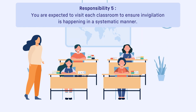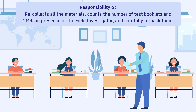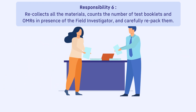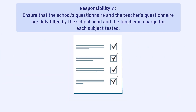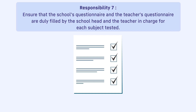Once the survey has started, you are expected to visit each classroom to ensure invigilation is happening in a systematic manner. Once the survey is complete and all the OMRs are filled, the observer recollects all the materials, counts the number of test booklets and OMRs in the presence of the field investigator, and carefully repacks them. At the same time, you need to ensure that the school's questionnaires and teacher's questionnaire are duly filled by the school head and the teacher in charge for each subject tested — which means for grade 3, the TQ will be filled by the language teacher, EVS teacher and math teacher.